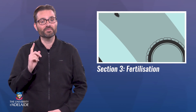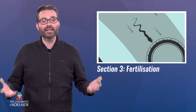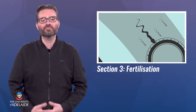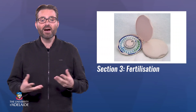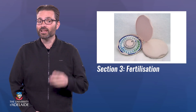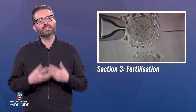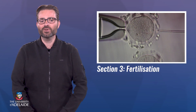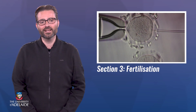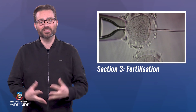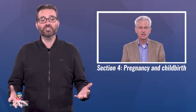In section three, the focus is on fertilization — how sperm and egg come together to create life, how fertilization can be blocked with contraceptives, and how assisted reproductive technologies can help with fertilization and infertility.